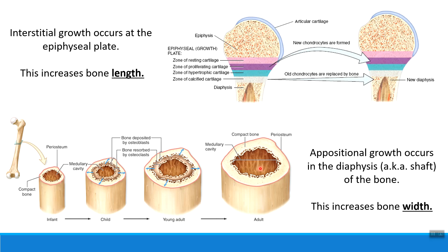So those are the two different mechanisms we use to grow your bones: appositional growth to make them wider and stronger, or interstitial growth to make them longer using that epiphyseal plate.